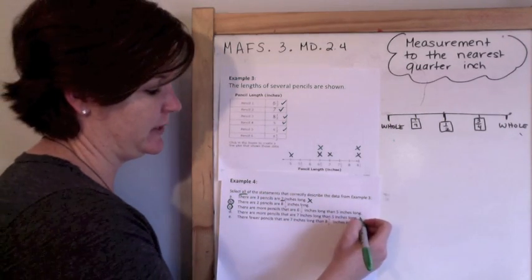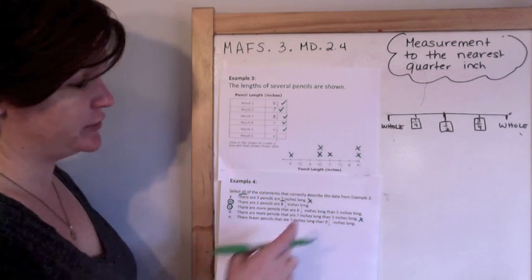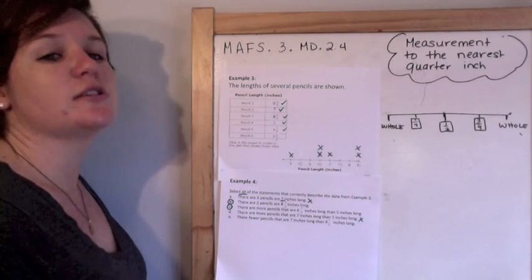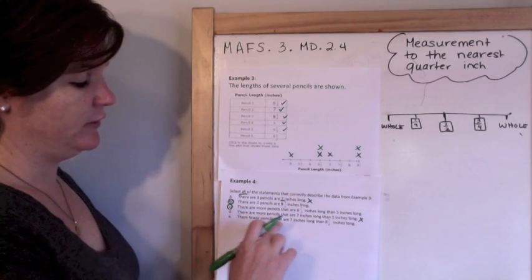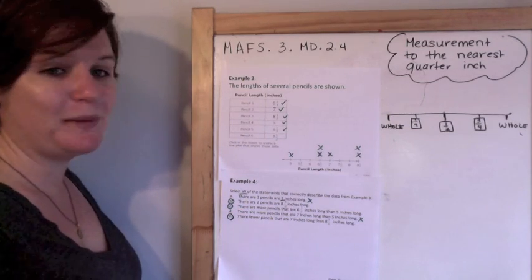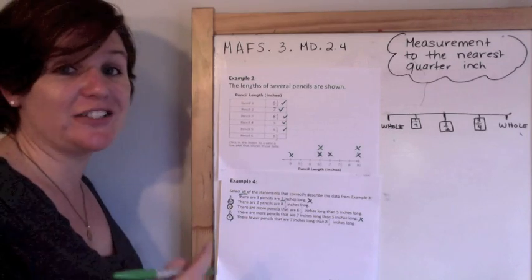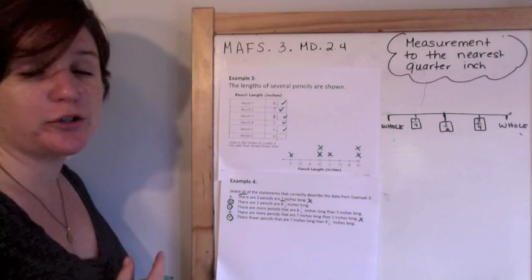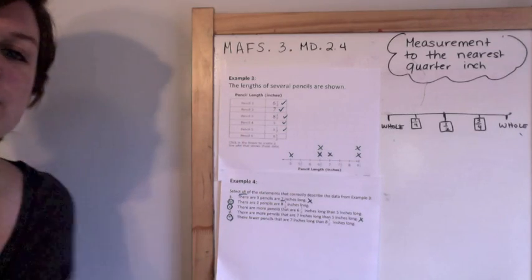There are more pencils that are six and a half inches long than five inches long. There's two that are six and a half and there's one that is five, so that is correct. There are more pencils that are seven inches long than five inches long. There's one that is seven inches long and there's one that is five inches long. They are equal, so that statement is not true. There are fewer pencils that are seven inches long than eight and a half inches long. So seven has one, eight and a half has two inches long. So that statement is true because fewer pencils are seven inches long than the eight and a half. So B, C, and E are all the correct answer. You must select all of those answers in order to receive credit. There's no partial credit for these answers, for these types of items.